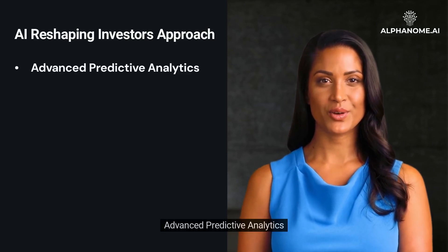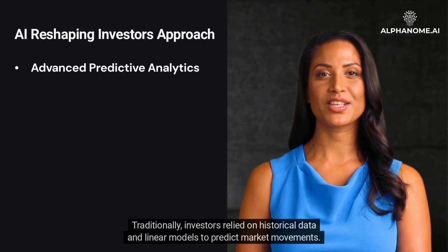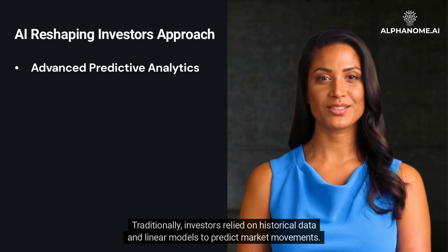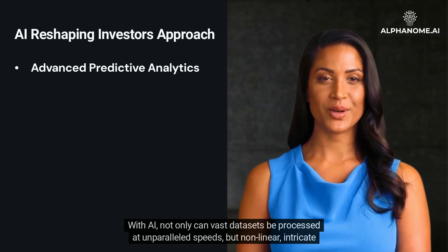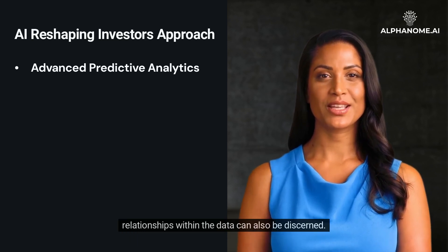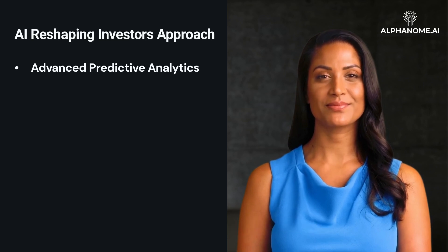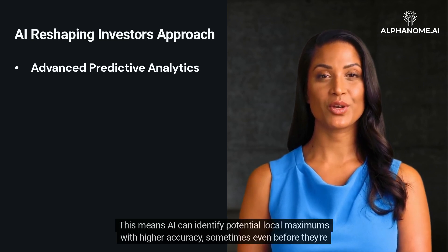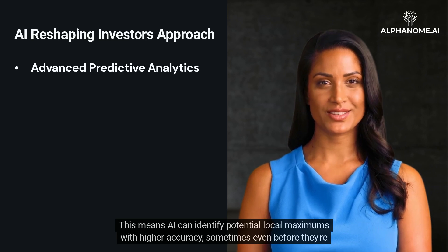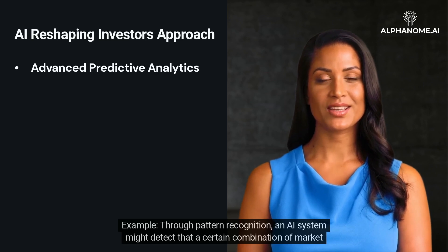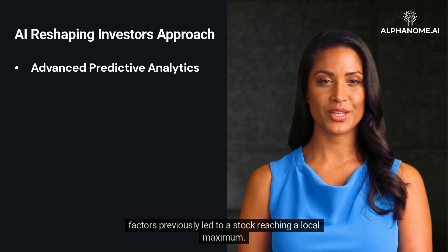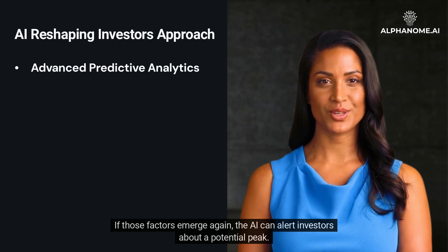Advanced predictive analytics is one key area. Traditionally, investors relied on historical data and linear models to predict market movements. With AI, not only can vast datasets be processed at unparalleled speeds, but non-linear, intricate relationships within the data can also be discerned. This means AI can identify potential local maximums with higher accuracy, sometimes even before they're apparent to the human eye. Through pattern recognition, an AI system might detect that a certain combination of market factors previously led to a stock reaching a local maximum — and if those factors emerge again, the AI can alert investors about a potential peak.